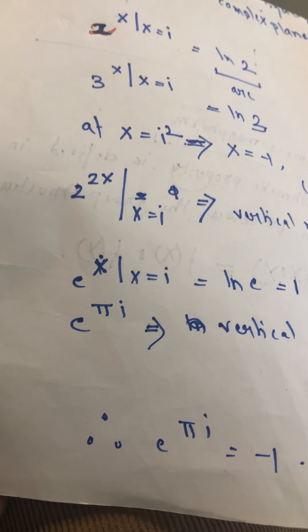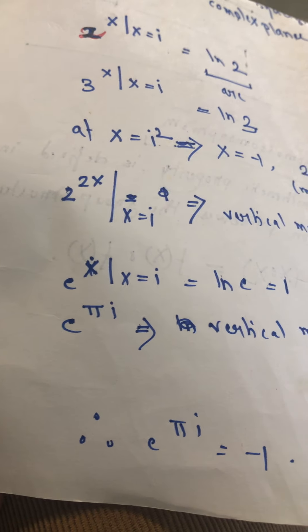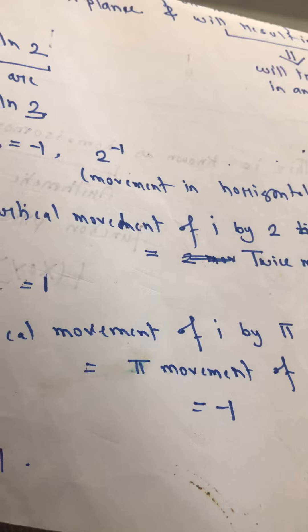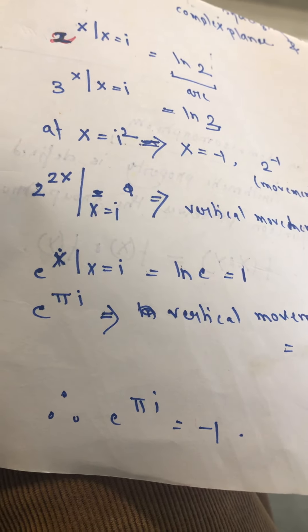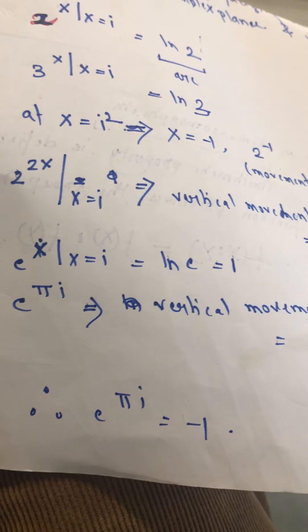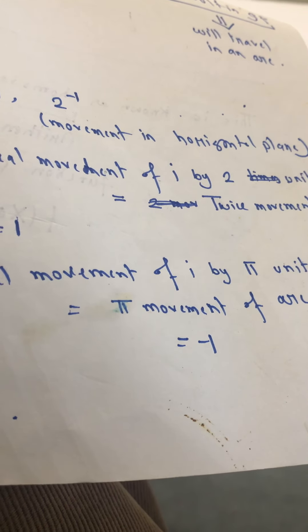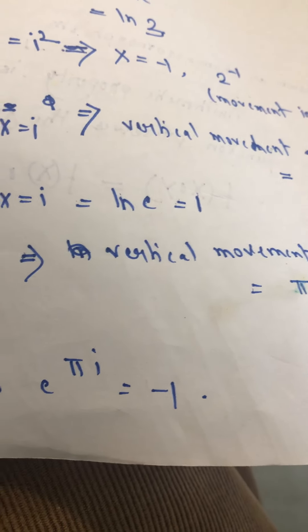So what could this x be? Now, if there is a vertical movement of i by pi units, and if in place of x I write e to the power pi i, in that case that would correspond to an arc of minus 1. And that is exactly what it means — that e to the power i pi is equal to minus 1.